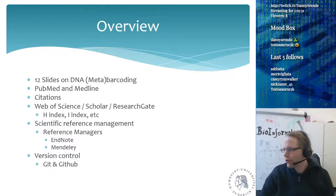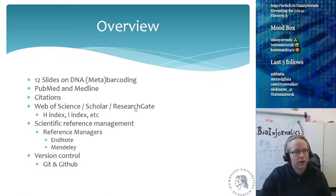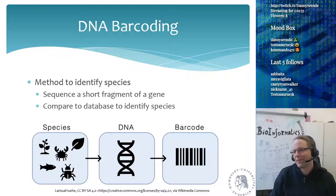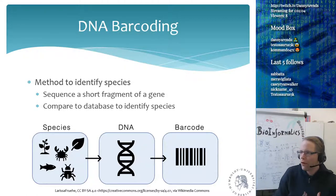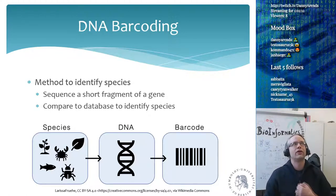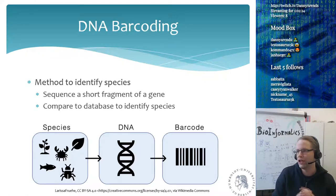Welcome back. First, we will do some DNA barcoding or metabarcoding. DNA barcoding is a way to identify species. You take a sample — for example, you go to a lake and take a cup of water — and you want to know what species are in that water. It is done by sequencing a very short fragment of a specific gene and then comparing that gene sequence to a database to identify the species.